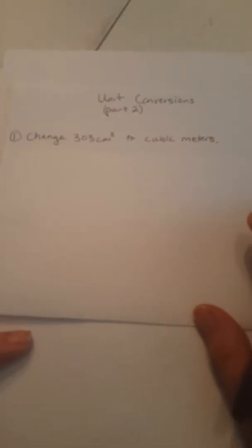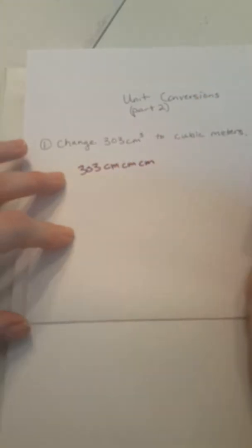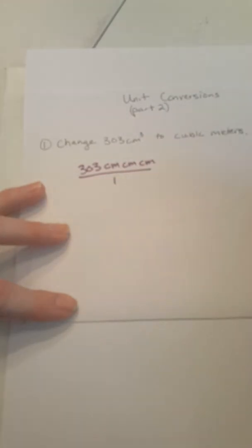This is unit conversions part two, a couple of harder questions. The first one is: change 303 cubic centimeters into cubic meters. We're going to start with what we know, which is 303 cubic centimeters. I'm going to write it as 303 centimeters centimeters centimeters because it's cubic centimeters. Notice that the centimeters is cubed but the 303 is not, so we write 303 one time and centimeters three times.